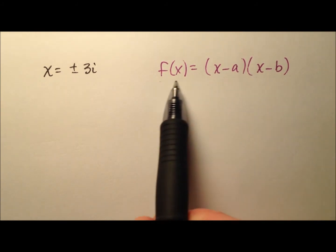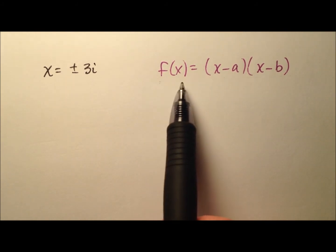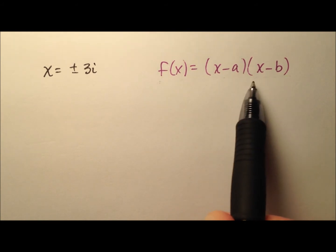So I know that any quadratic function, and it's quadratic because it's degree 2, will have two roots and they can be written as x minus a and x minus b.